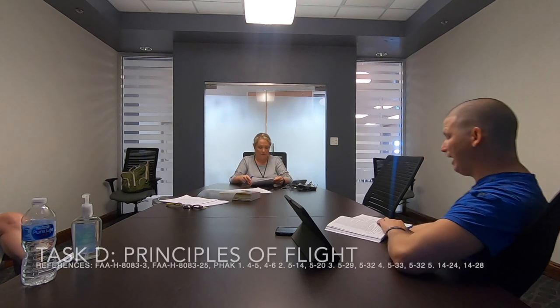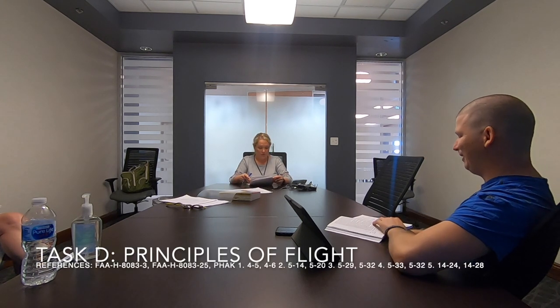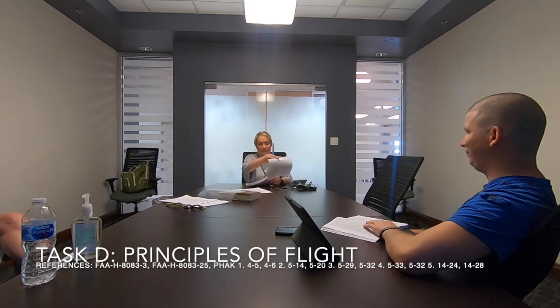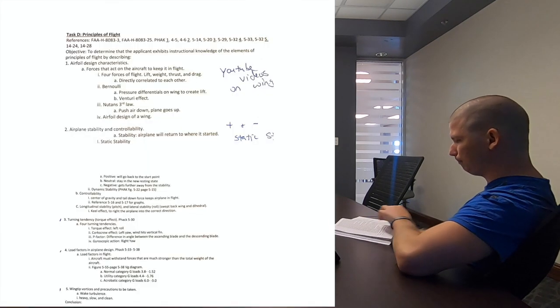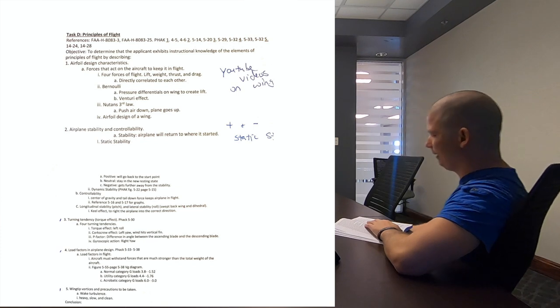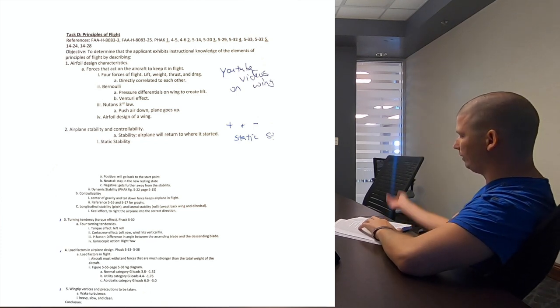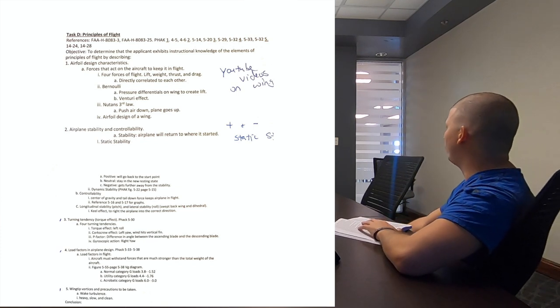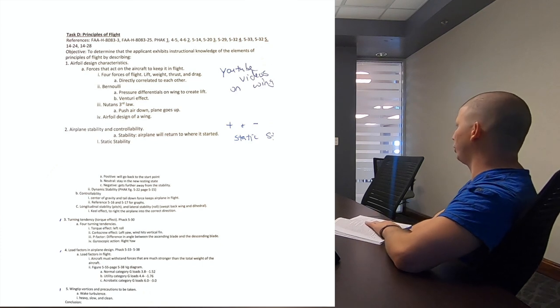To recap: you went through FOI for about 30 minutes covering three tasks, and then moved on. After runway incursion avoidance, Task D is principles of flight. When we talked about wing types earlier, here is where you cover them. The examiner will take you straight into airfoil design characteristics — that's what he likes.